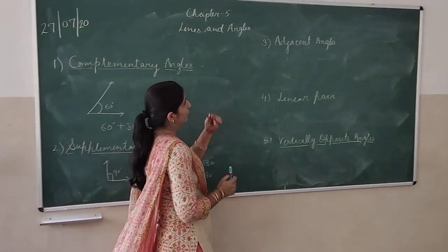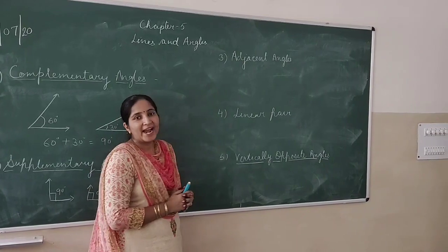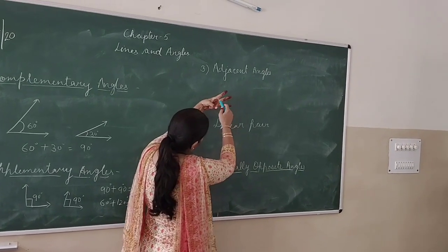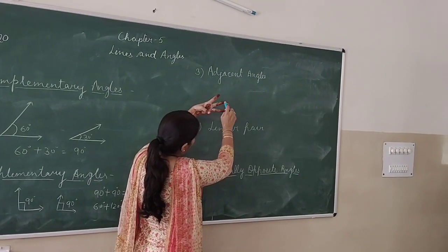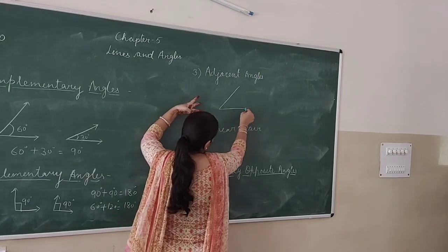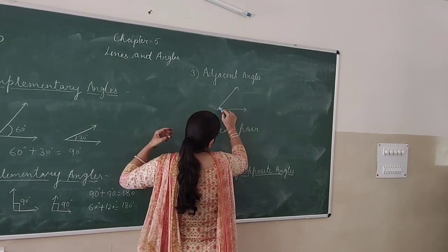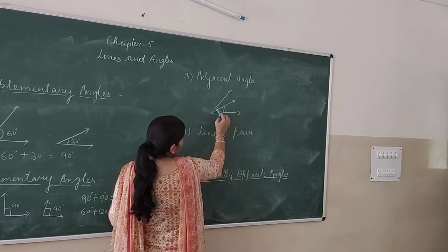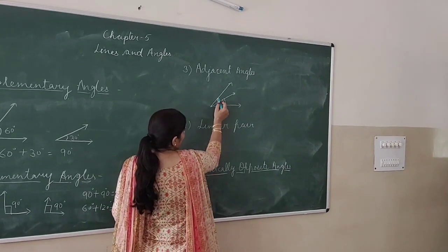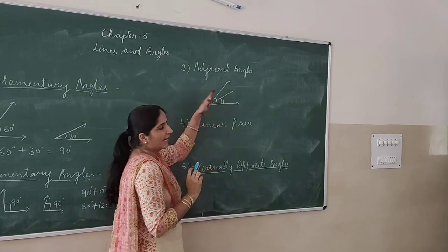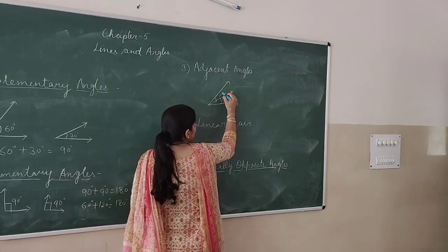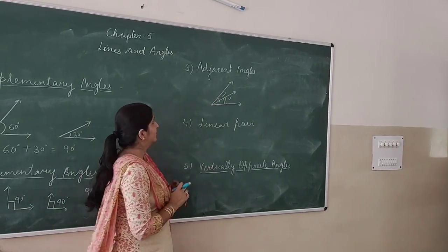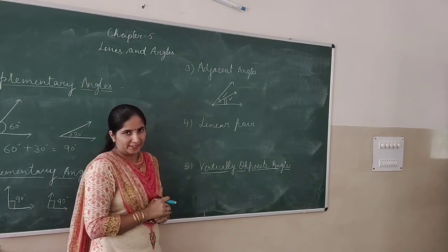Now let us come to another type of angle — adjacent angles. You can take an example of fingers: suppose these two fingers are making an angle. There are two arms with one common arm between the two angles, one common vertex, and the two non-common arms are on either side of the common arm. So these types of angles are known as adjacent angles — they are adjacent to each other.